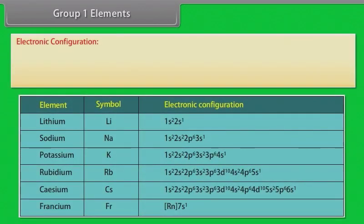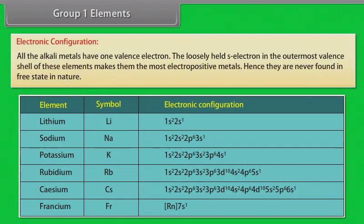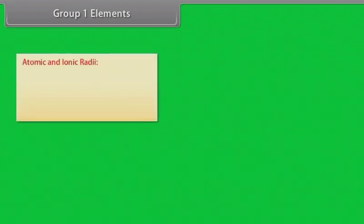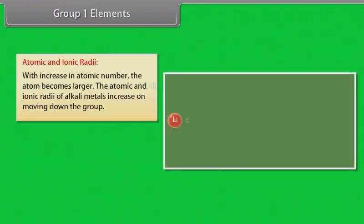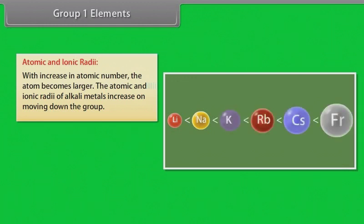Group 1 elements. Electronic configuration. All the alkali metals have one valence electron. The loosely held S-electron in the outermost valence shell of these elements makes them the most electropositive metals. Hence, they are never found in free state in nature.